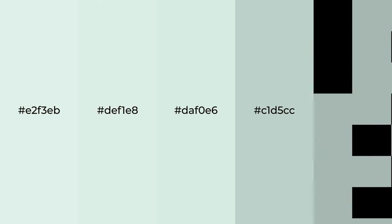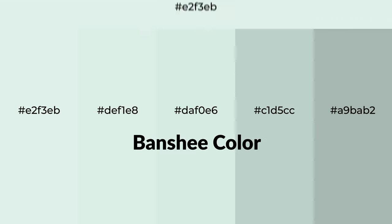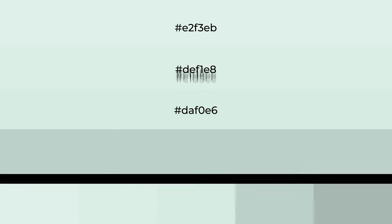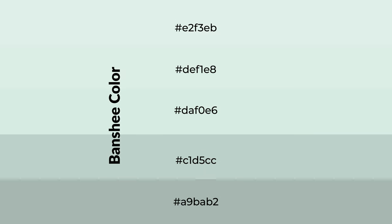Cool shades of banshee color with green hue for your next project. To generate tints of a color, we add white to the color. Tints create light and exquisite emotions. To generate shades of a color, we add black to the color.